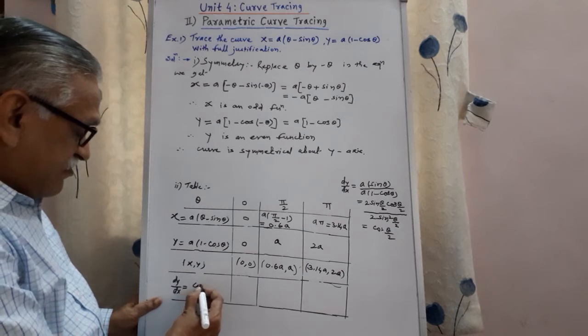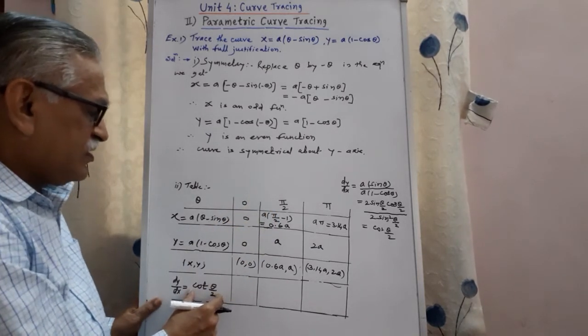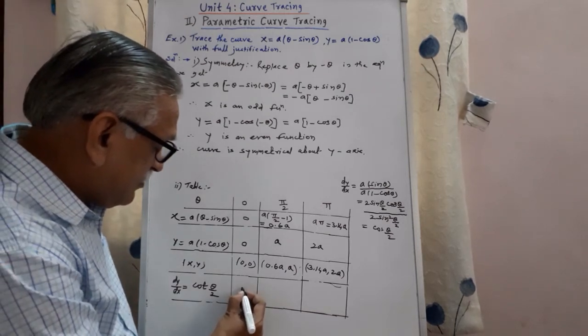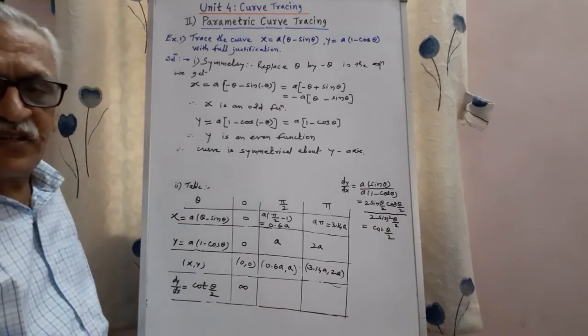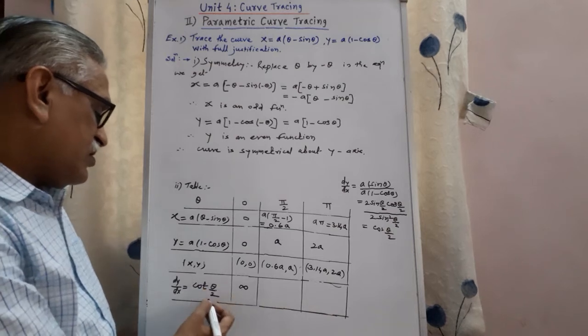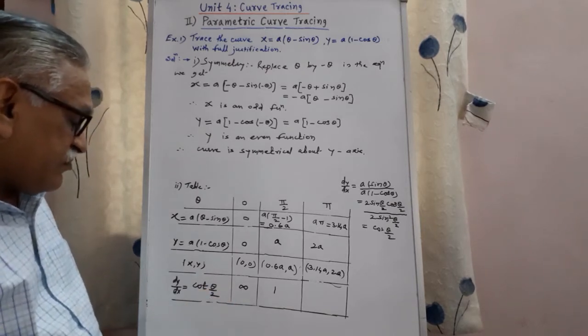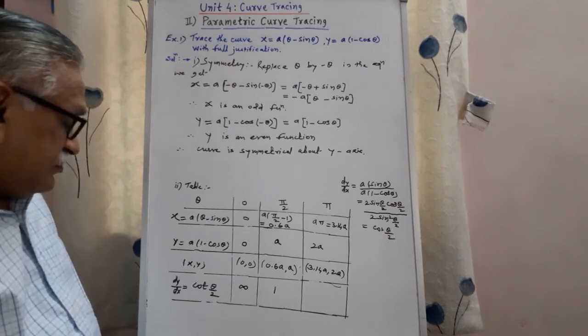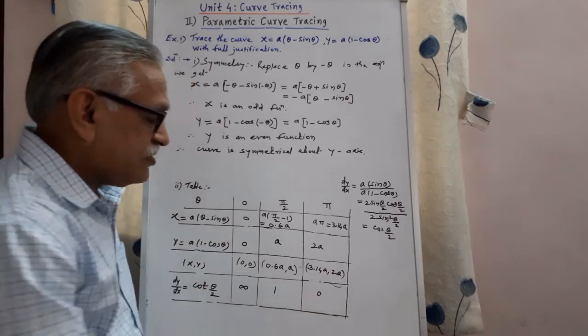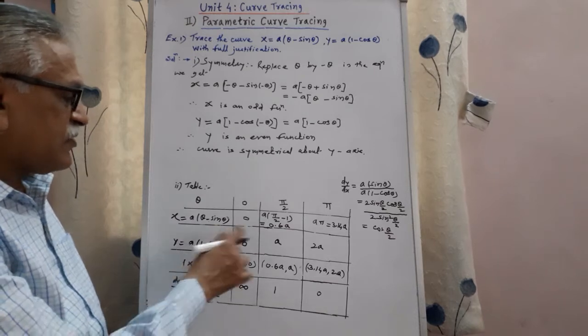Therefore that value is here just cot theta by 2. And then we try to find out this slope for all this theta. When theta is 0 it is cot 0, cot 0 is 1 by tan 0, tan 0 is 0, 1 by 0 we get infinity, therefore cot of 0 is infinity. Cot of pi by 4 it is 1. And cot of pi by 2, 1 upon tan pi by 2, tan pi by 2 is infinity, 1 by infinity is 0. Therefore these are the slopes corresponding to that point.